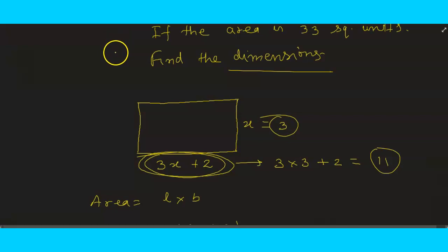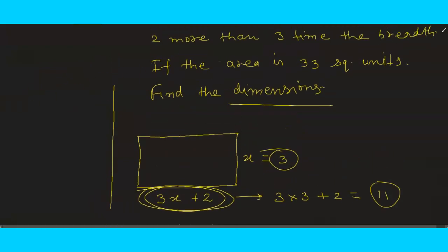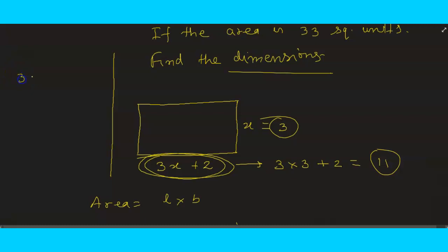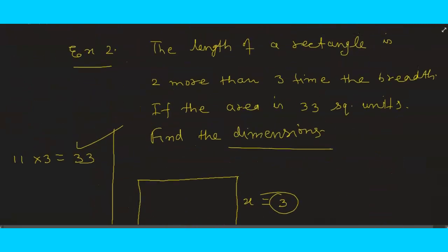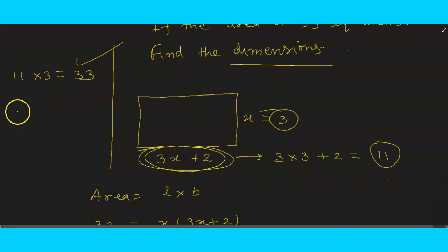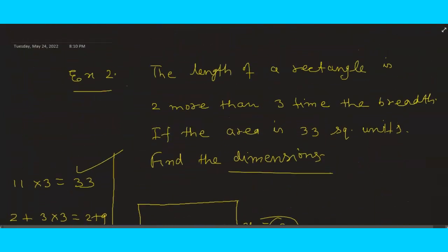Cross-checking: length × breadth = 11 × 3 = 33 square units — the area condition is satisfied. Also, two more than three times the breadth is 2 + 9 = 11, which equals the length — the second condition is also satisfied. Both conditions are verified, so the answer is correct. I have given two examples, one from algebra and one from geometry, which should help you understand the topic better.